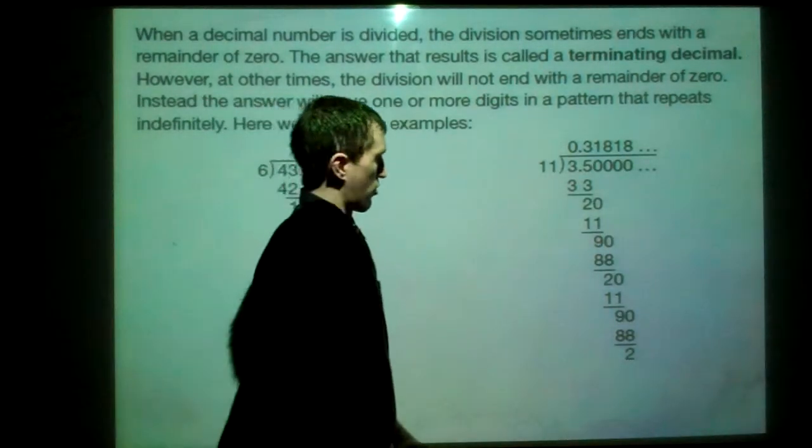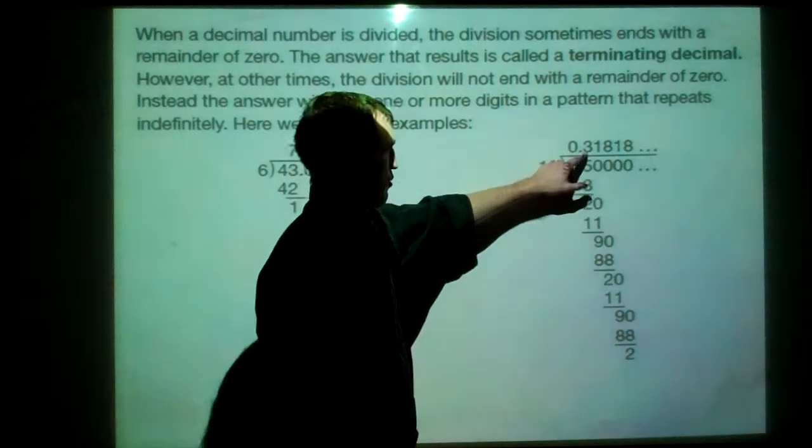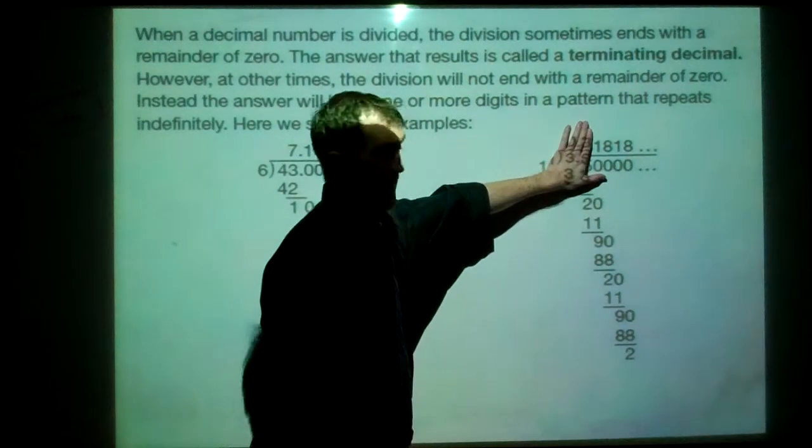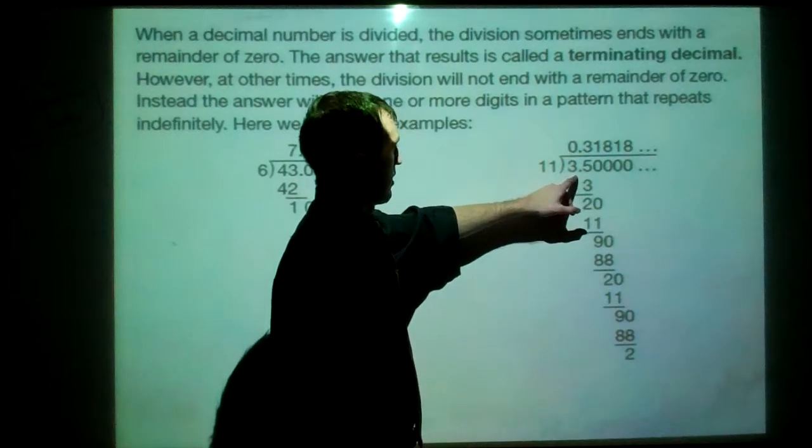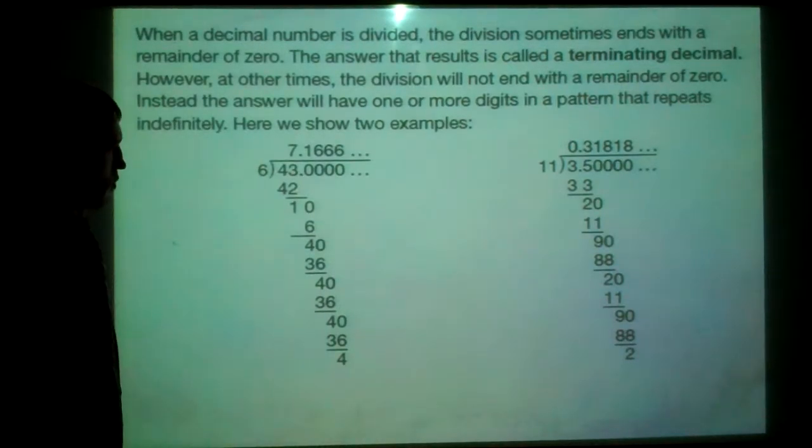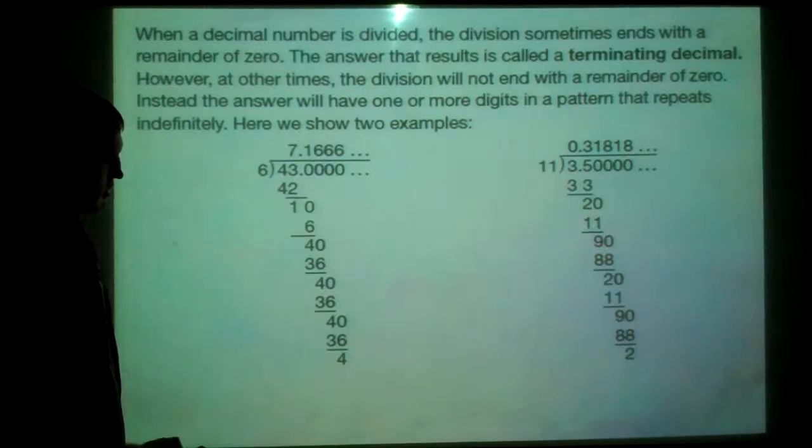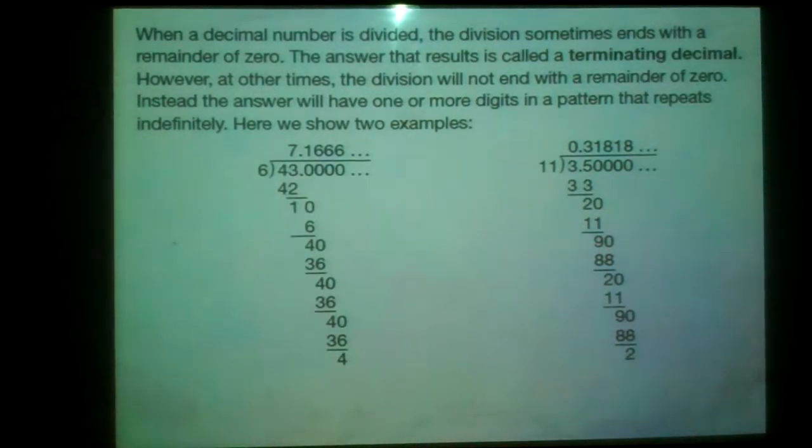This one, I won't go through it as rigorously. But 3 doesn't repeat, but the 1 and the 8 keep repeating. That's when we take 3.5 divided by 11. So we can see that to get the 1 and the 8, we're going to alternate between getting 11 here and 88. And we get the same numbers repeated over and over again in that fashion. So here just the 6 repeated. Here the 1 and the 8 repeat.